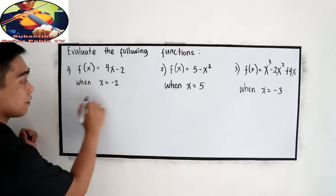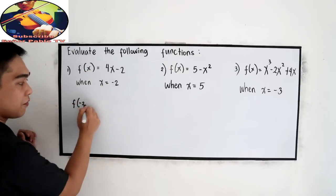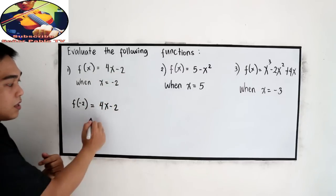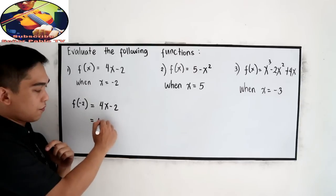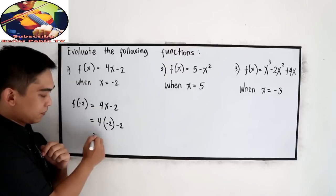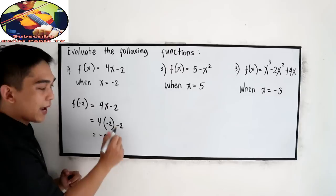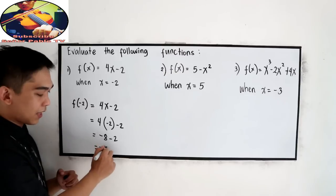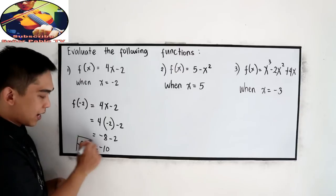x is equal to negative 2, so f of negative 2 is equal to 4x minus 2. Now we have a value for x, so we need to substitute. So 4 times negative 2 minus 2 — that is negative 8 minus 2, which is negative 10. That means f of negative 2 is equal to negative 10.